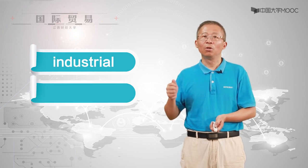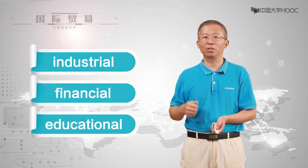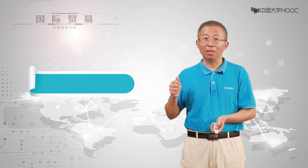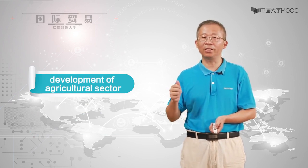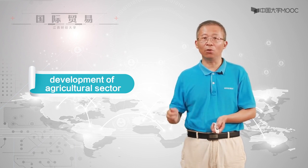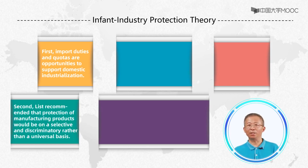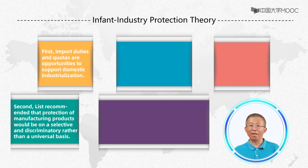Tariffs and quotas are opportunities to support domestic industrialization. To show that these are not the only methods, List also referred to many other policies, such as industrial, financial, and education policies, as obligations for promoting the domestic industry. Furthermore, List highlighted the development of the agricultural sector as a requirement for successful industrial development. He recommended that protection of manufacturing products should be selective and discriminatory rather than on a universal basis.